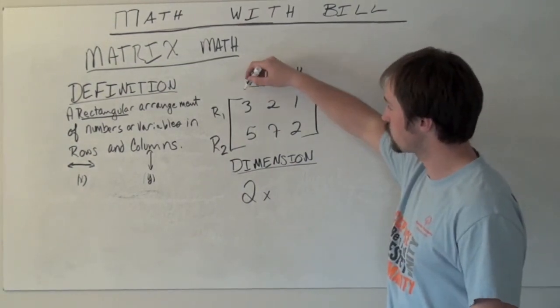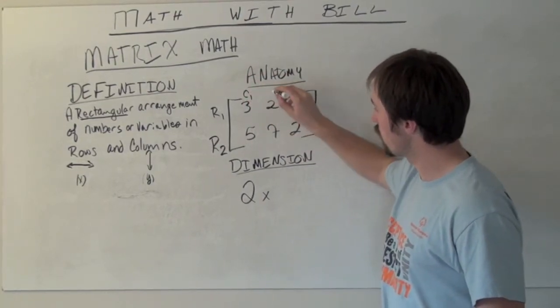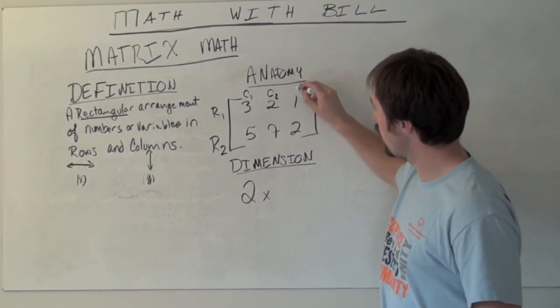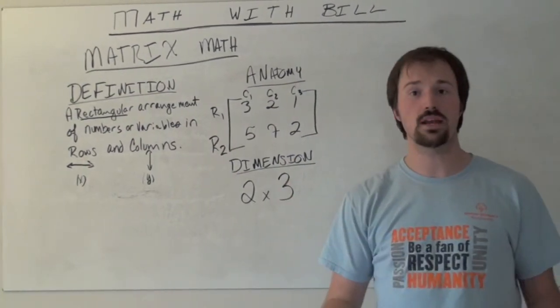So vertically from left to right, like we're reading a book, we have column 1, column 2, and column 3. So this is really a 2 by 3 matrix.